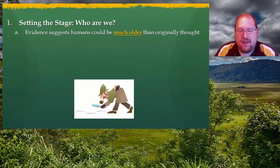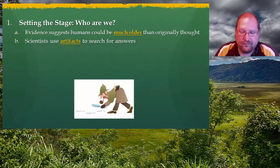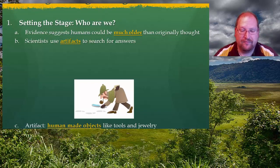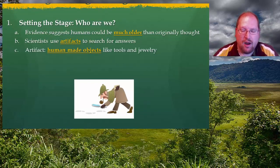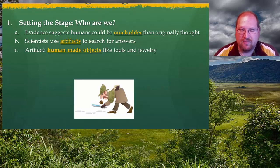Evidence suggests that we as humans could be much older than originally had been thought. In order to find out information about the past, scientists use artifacts to search for clues to answer these questions. Artifacts are simply human-made objects like tools and jewelry that help us better understand the people that used them. Using artifacts helps scientists understand how people lived a long time ago — whether or not they used forks or spoons, had dolls, what kinds of weapons were used.